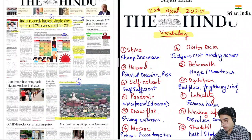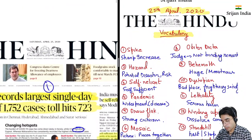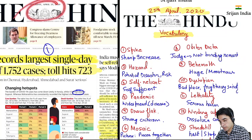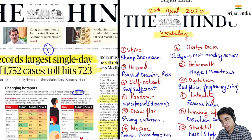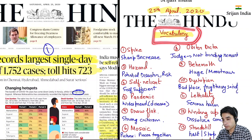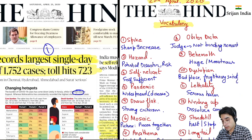Hi, today is the 25th of April 2020. Let us have a quick discussion of today's newspaper, The Hindu. Aaj ke paper mein yeh sare essential vocabulary words hai. Pahla, first is spike. Spike ka matlab hota hai sharp increase hona, sudden rise hona — that is called spike.